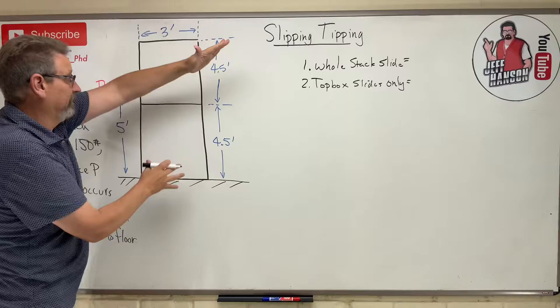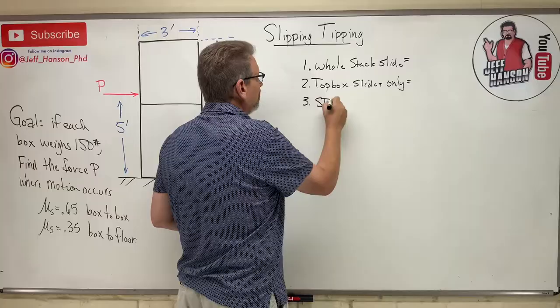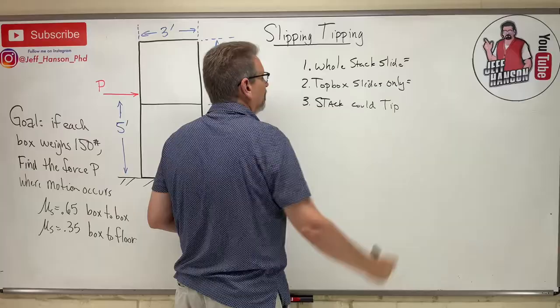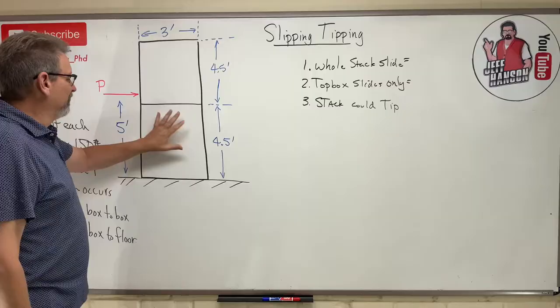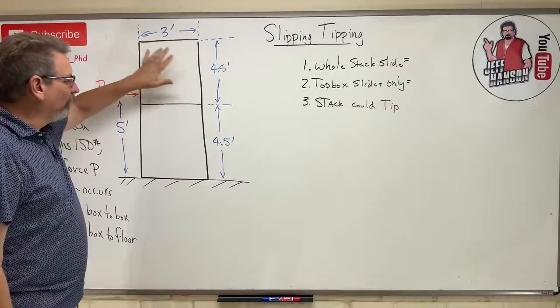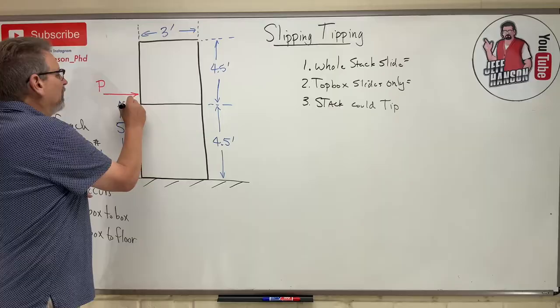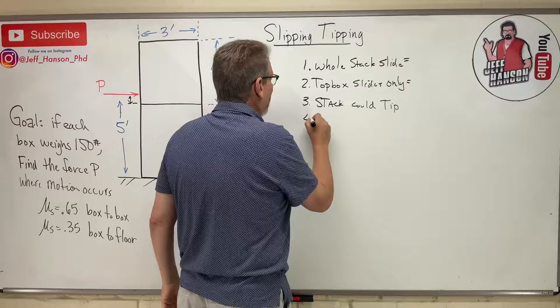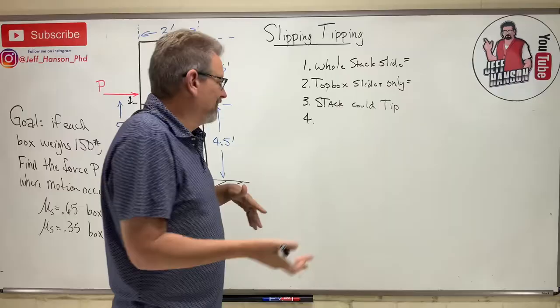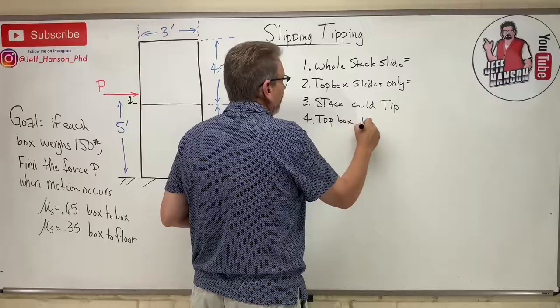Anything else? The pile could just tip over — so number three, the stack could tip. And technically there is a fourth case: the bottom box stays still and just the top box tips. I don't think that could possibly happen because the force is applied so low — it's like trying to tip your refrigerator by pushing on it a foot off the floor. It's not going to tip over. So: top box tips.